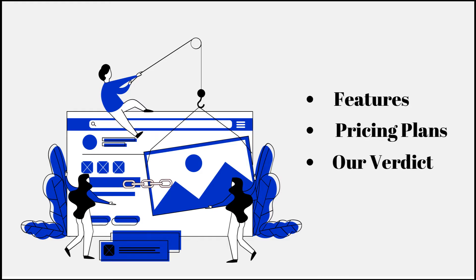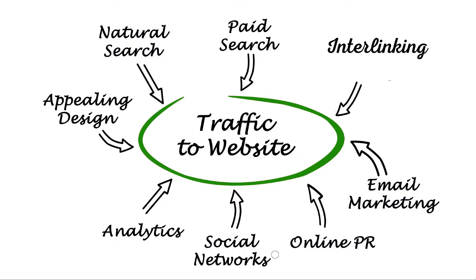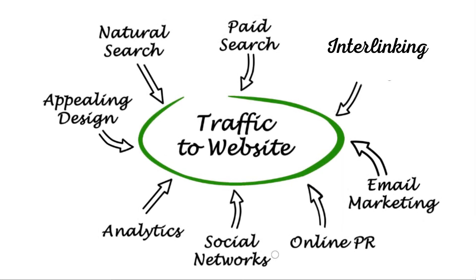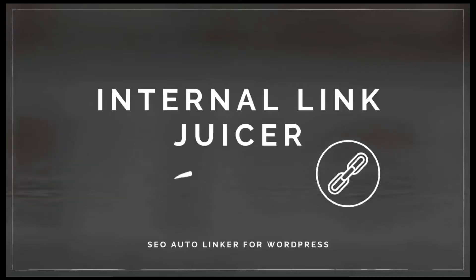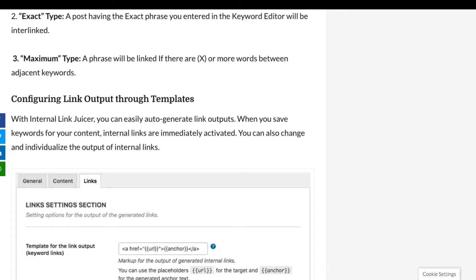Do you want to build an SEO-friendly site structure? Internal linking is one of the best SEO practices to do that. Internal links play a huge role in boosting your rankings and user experience. But as your site expands, it becomes very difficult to manage your internal link strategy — and that's where Internal Link Juicer, a popular internal linking plugin for WordPress, can help.